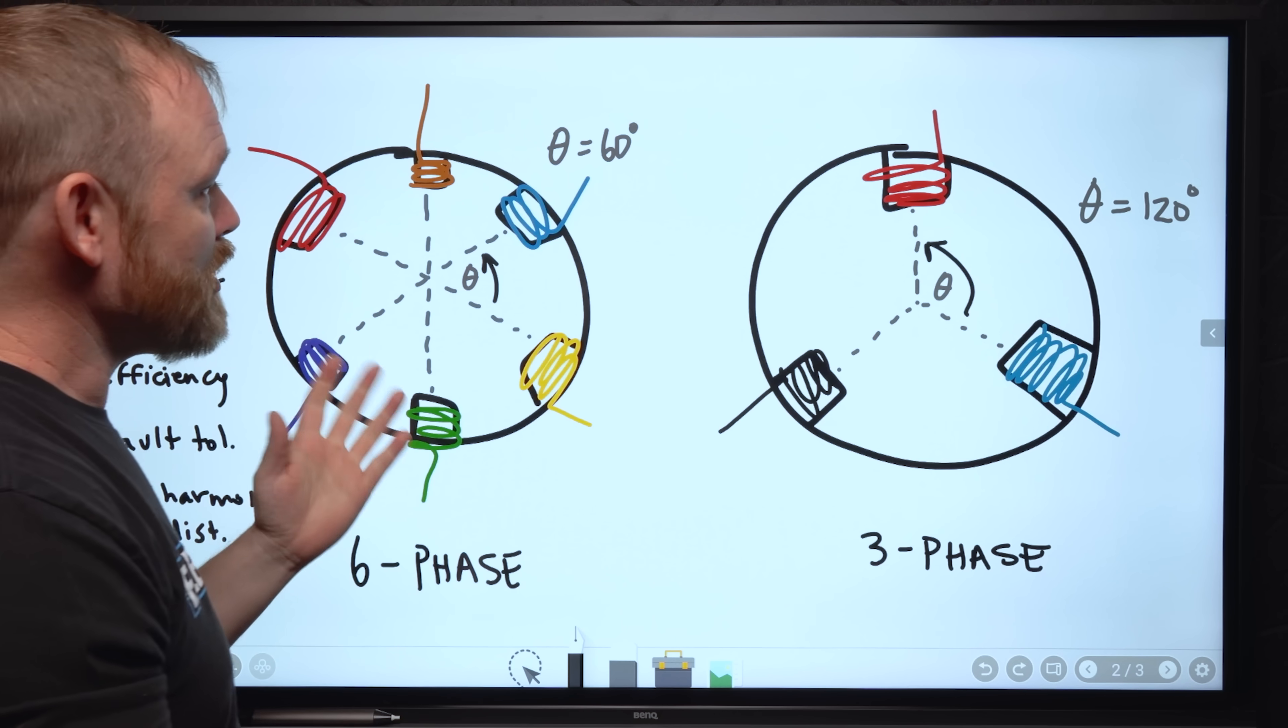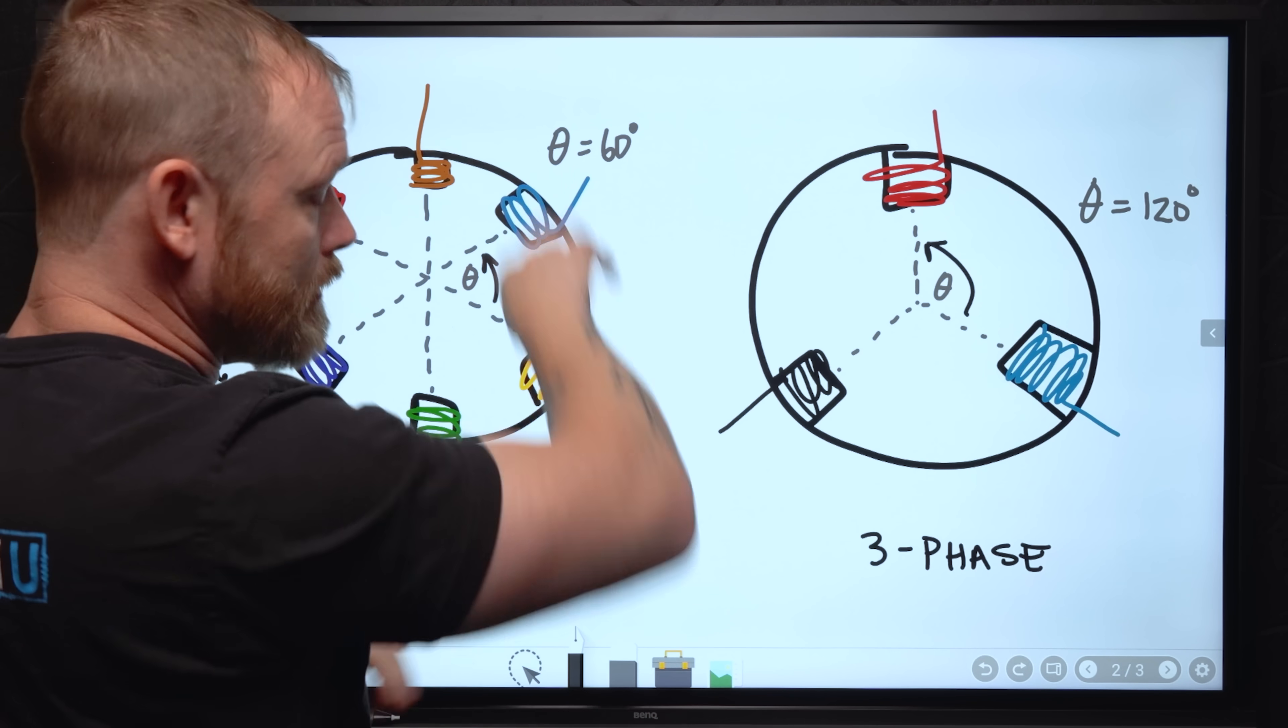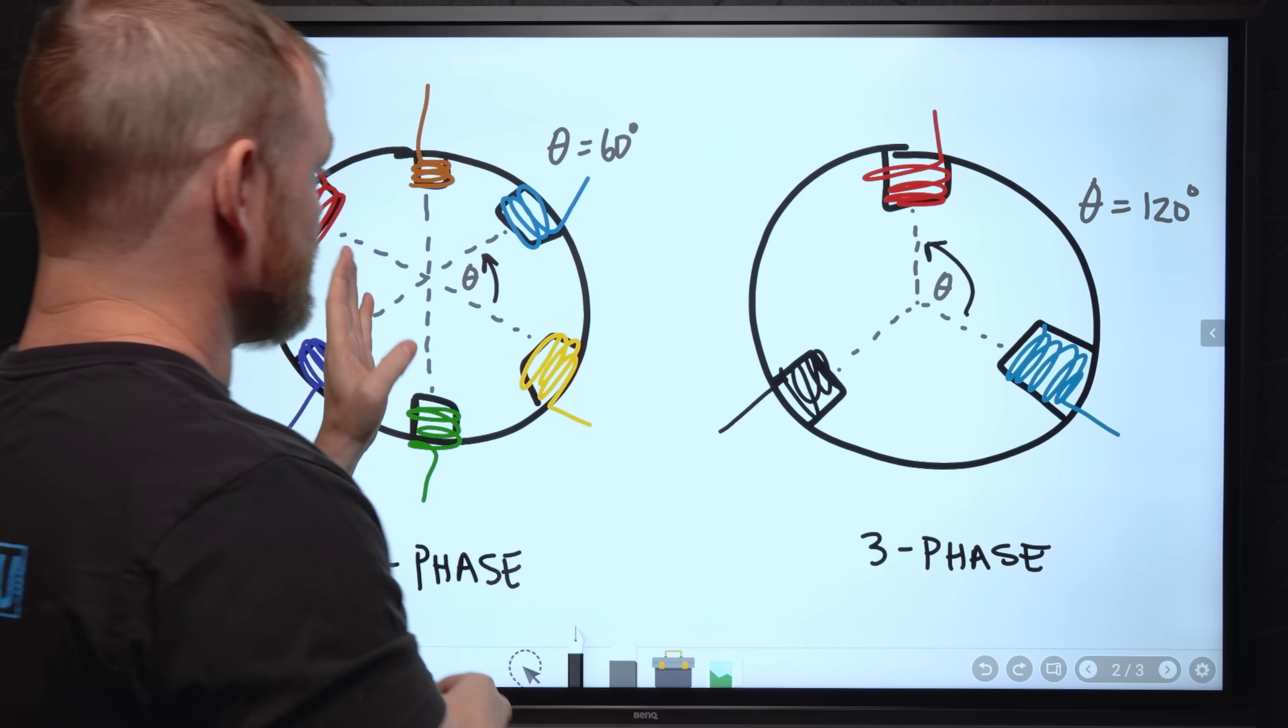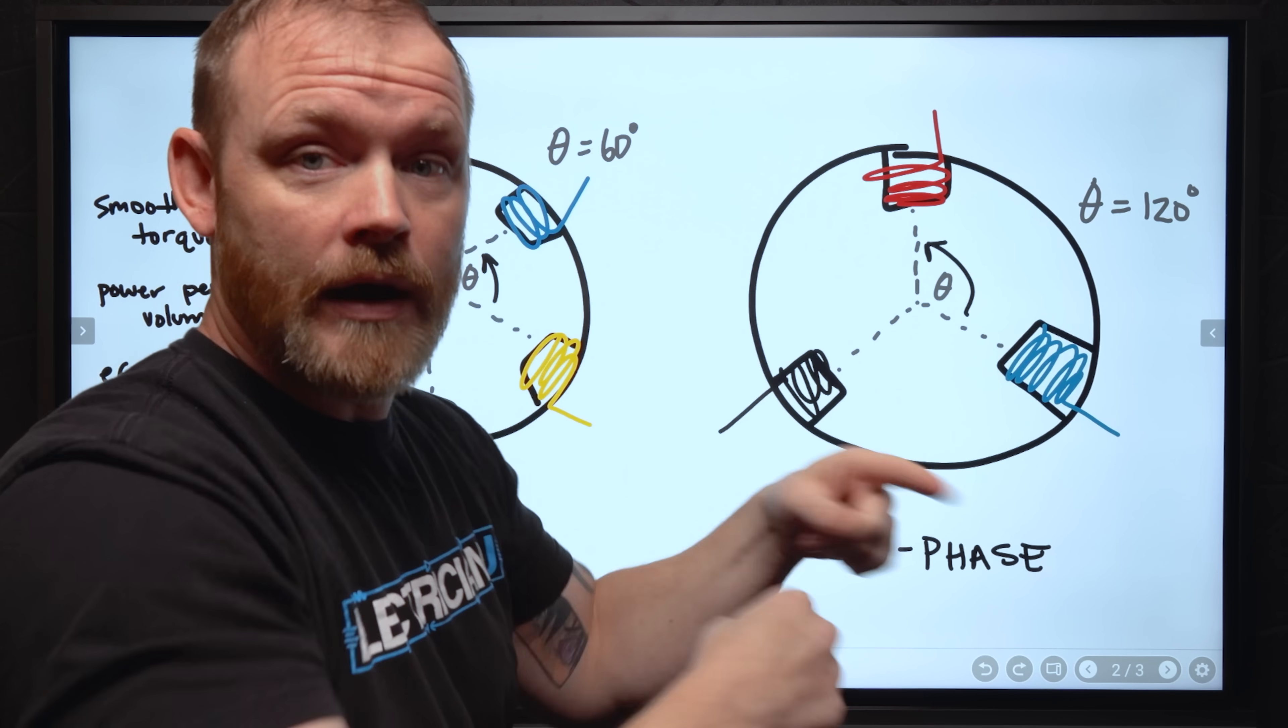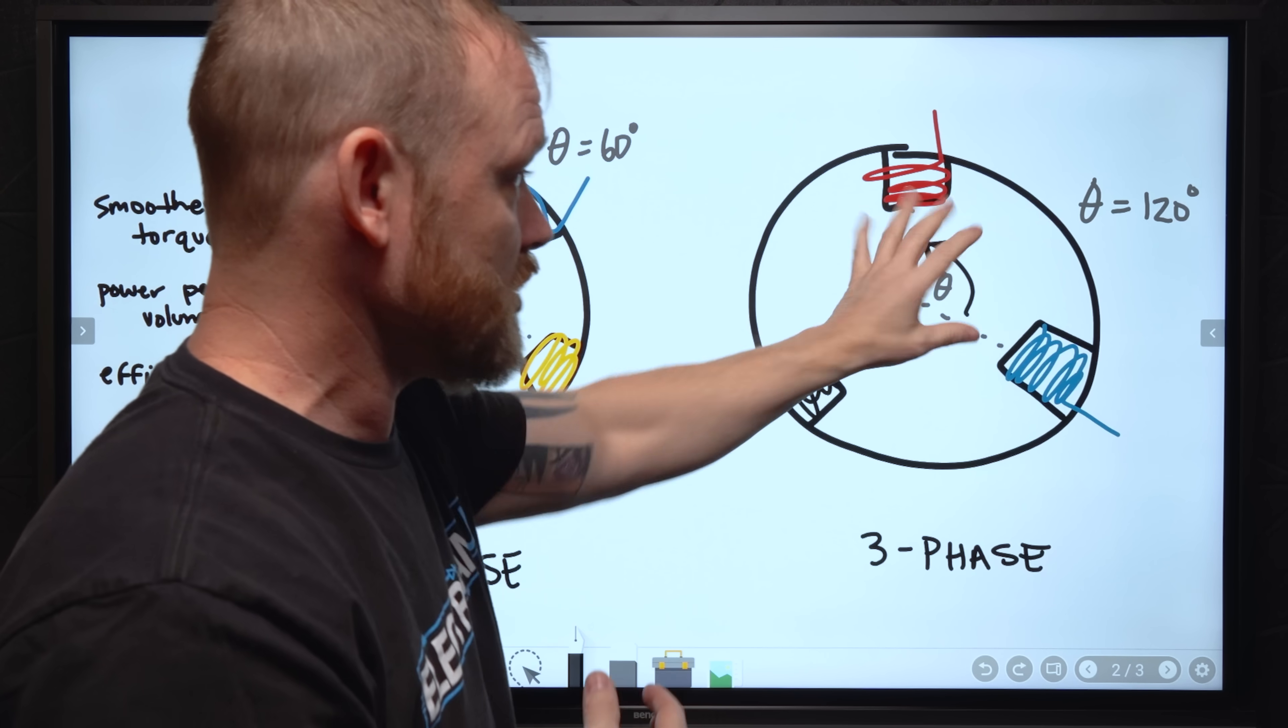Well, with a six-phase motor, there's less separation between there. You have a solidly rotating magnetic field, so it's easier for a synchronous motor to synchronize faster. So it actually has a better torque curve than a traditional three-phase motor.